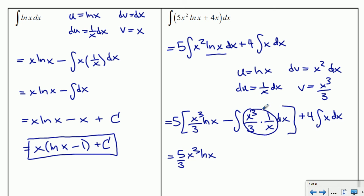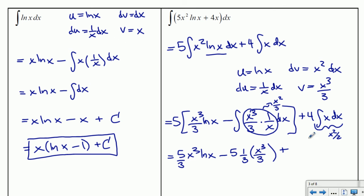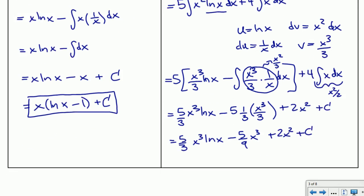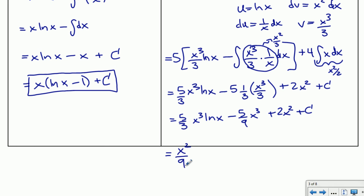Applying the formula with the factor of 5 out front: 5 times [x cubed over 3 times ln x minus the integral of x cubed over 3 times 1 over x dx]. The x cubed over 3 times 1 over x simplifies to x squared over 3, whose antiderivative is x cubed over 9. Adding the antiderivative of 4x gives 2x squared. So we get 5 thirds x cubed ln x minus 5 over 9 x cubed plus 2x squared plus c, or factoring x squared over 9: (x squared over 9)(15x ln x minus 5x + 18) plus c.